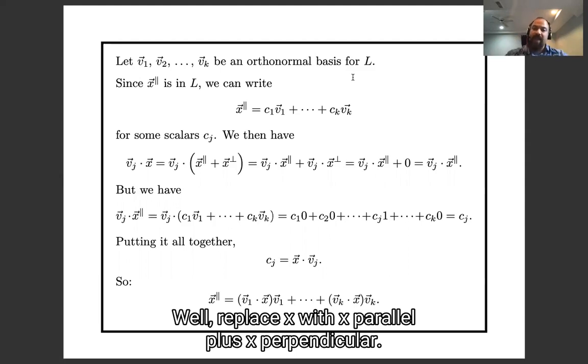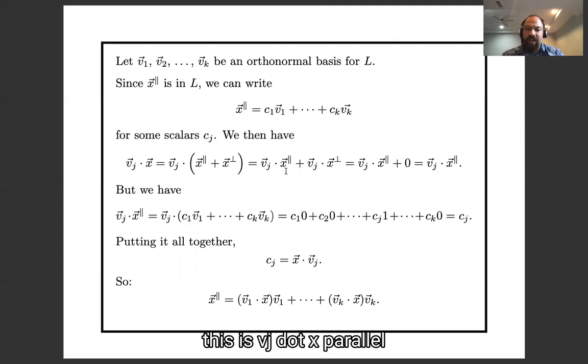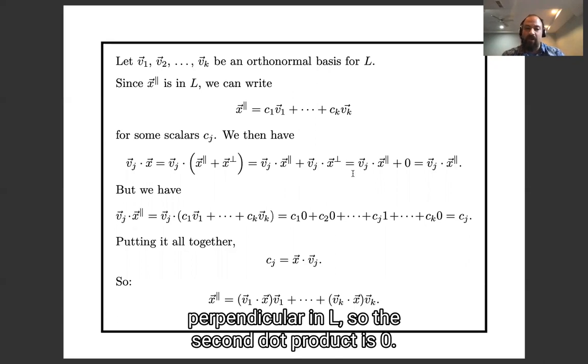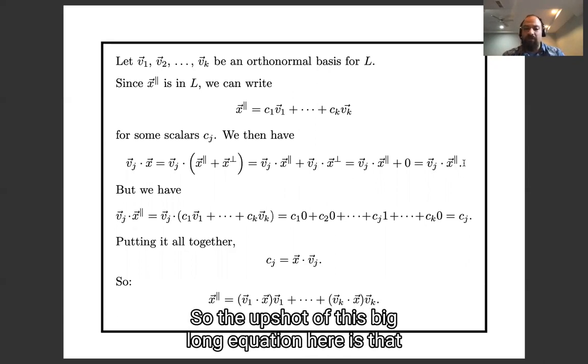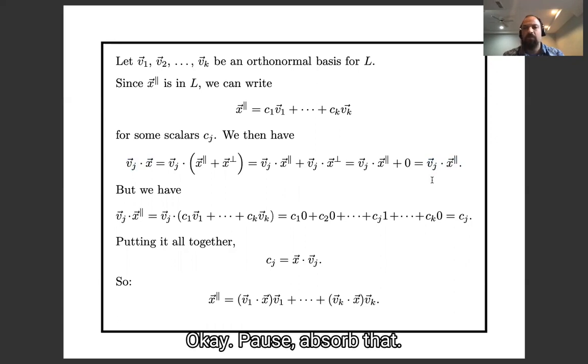Well, we replace x with x-parallel plus x-perpendicular. And then using a distributive law, this is vj dot x-parallel plus vj dot x-perpendicular. But vj is in L, and x-perpendicular is perpendicular to L, so this second dot product is 0. So the upshot of this big long equation here is that vj dot x is the same as vj dot x-parallel. Okay, pause, absorb that. I'm going to move on, but you can pause for longer if you like.